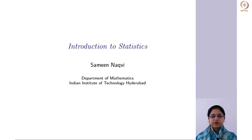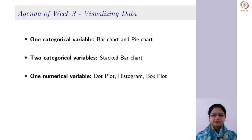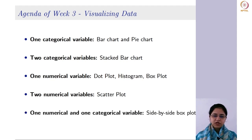Welcome to the third week of this course. So far, we have studied about the data collection process and the different types of variables, and depending upon that we saw different summary measures. Today we are going to learn about different visualizing tools for categorical and numerical variables. We will begin with the categorical variables — bar chart and pie chart — then stacked bar chart for two categorical variables. For numerical variables, we will learn about dot plot, histogram, box plot, scatter plot, and side-by-side box plot.